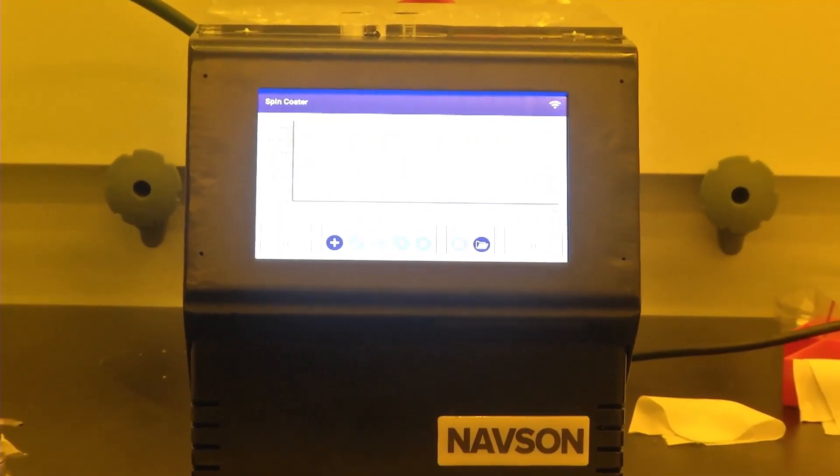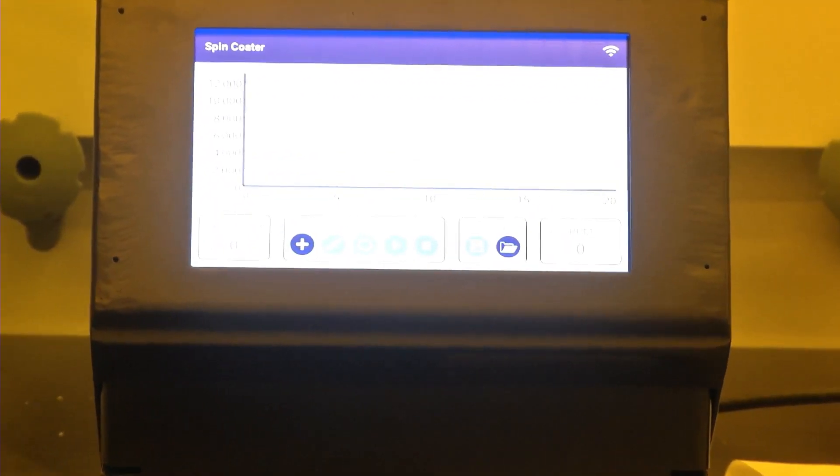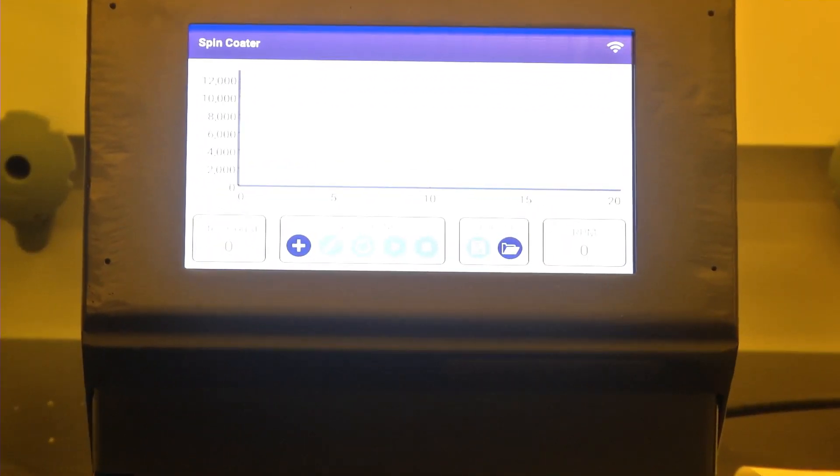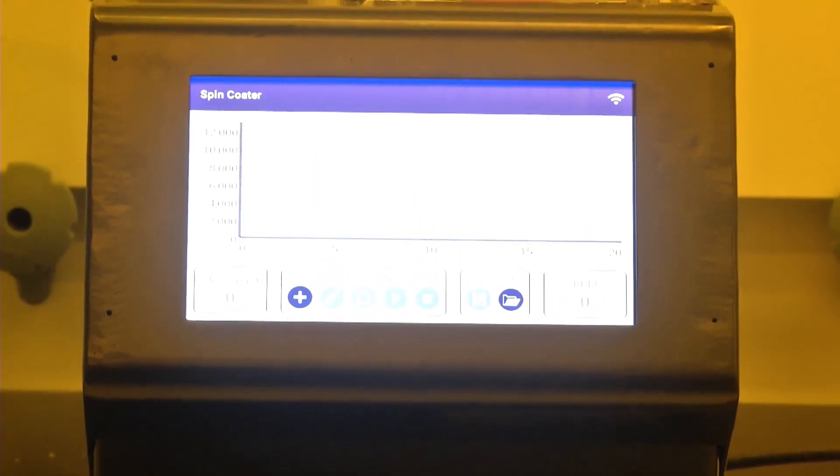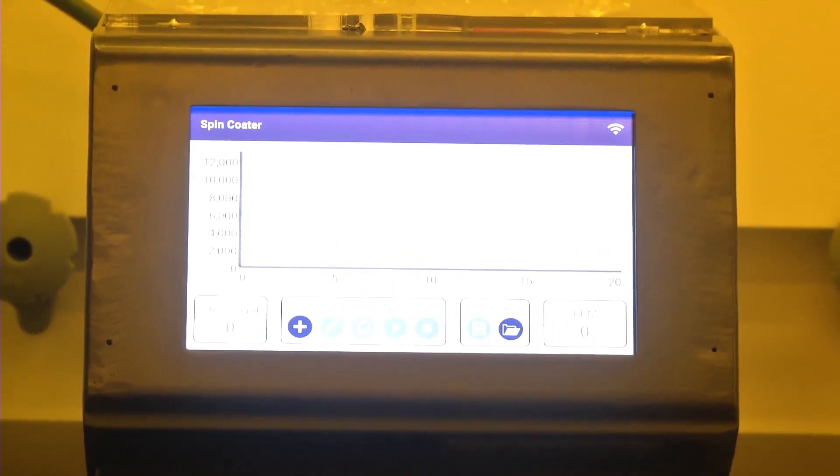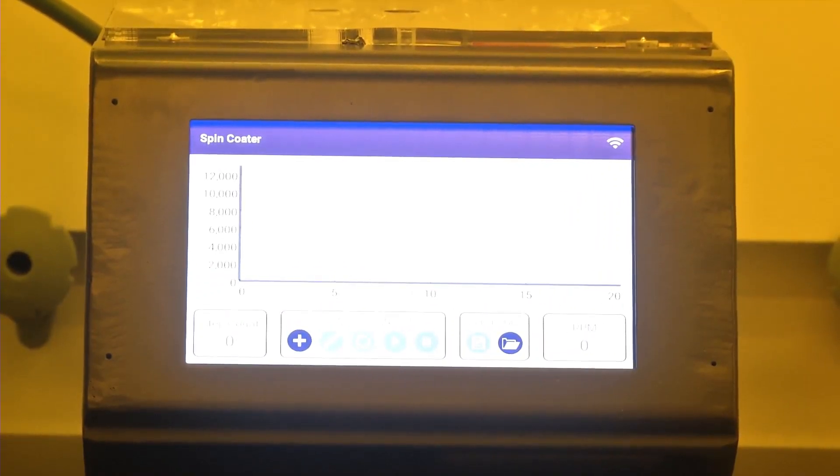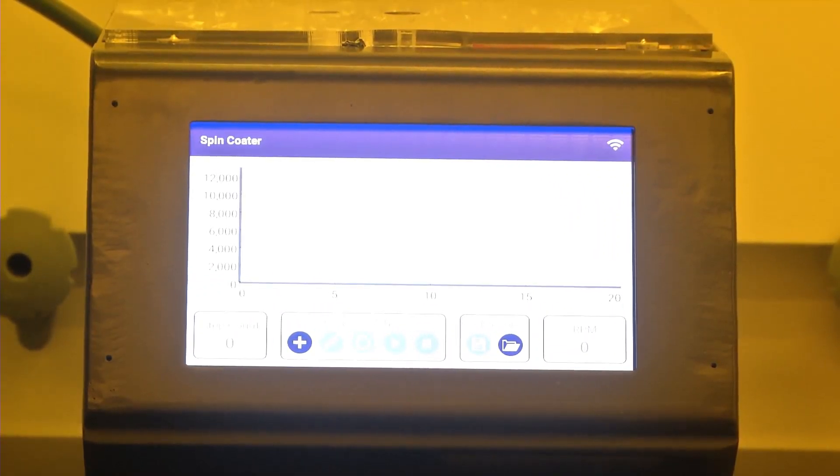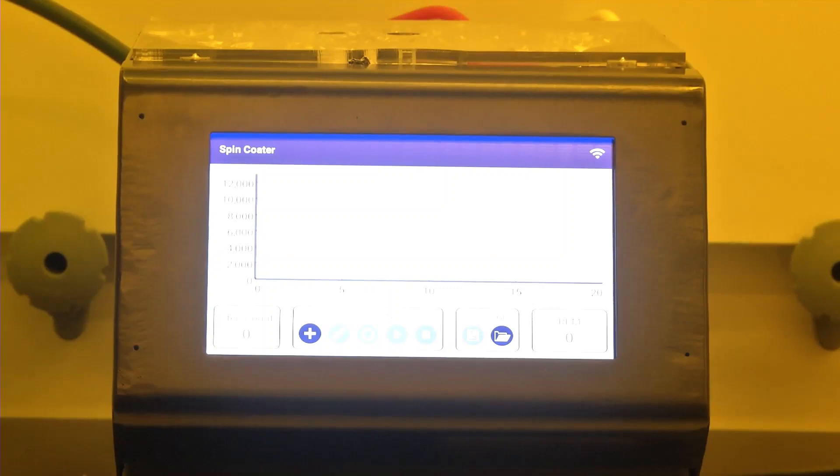The first step to spin coat any kind of photoresist or polymer is to use a spin coater. The spin coater works on the principle of centrifugal force. You keep the substrate on a sample holder, and the sample holder holds the sample by virtue of vacuum which is generated by a dedicated vacuum pump. Let us now see how a spin coater can be operated.